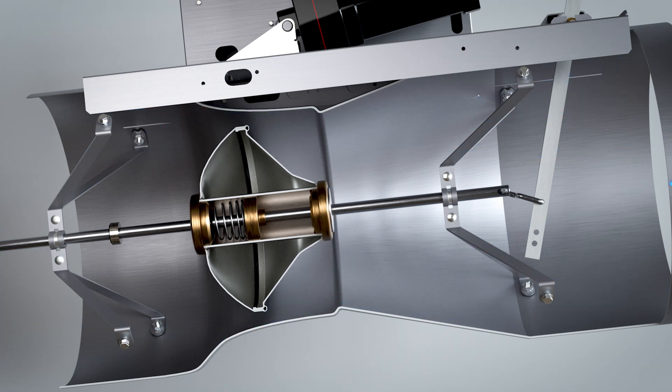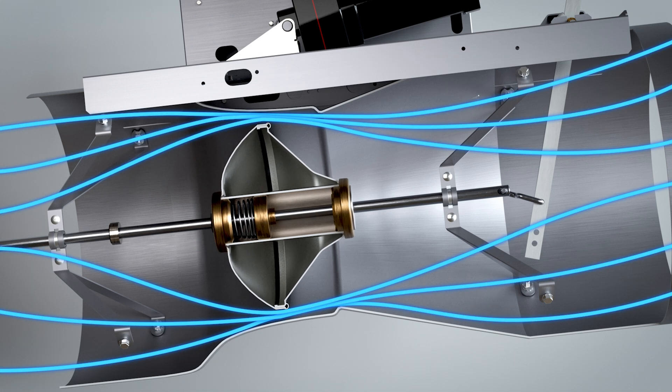When the pressure decreases, the spring expands and the cone slides out of the throat, increasing the area for air to pass, all to maintain the desired flow rate.